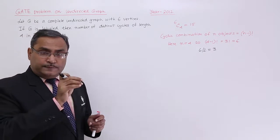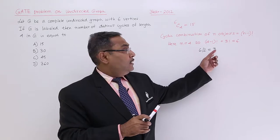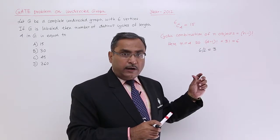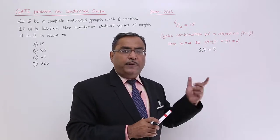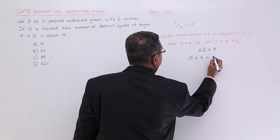Now for a particular set of 4 vertices, this number of cycles we are getting. But this particular set of 4 vertices can be selected in 15 different ways, so my answer will be 15 into 3, and that is 45.